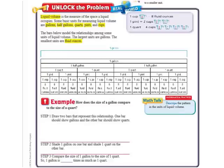We're just going to go ahead and read the page and fill in what we need to. Liquid volume is the measure of the space that a liquid occupies. Some basic units for measuring liquid volume are gallons, half gallons, quarts, pints, and cups. The bars below model the relationship among some of the units of liquid volume. The largest units are gallons. Think of a gallon of milk. The smallest units are fluid ounces.